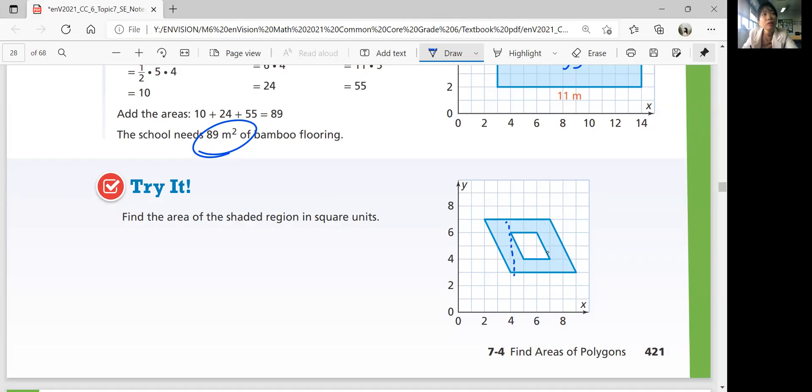This is 5 units and that's 4 units. So the bigger parallelogram is 5 times 4, which is 20 square units. And then the smaller parallelogram has a base of 2 and the height of 2. So 2 times 2 is 4. So the area of the shaded one is 20 minus 4, which is 16 square units.